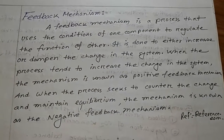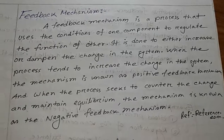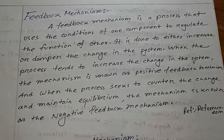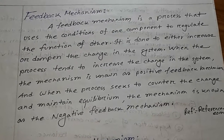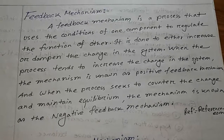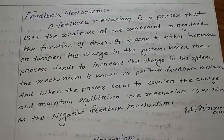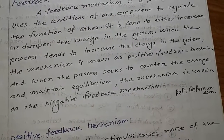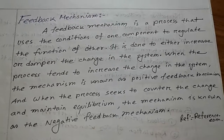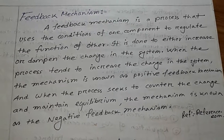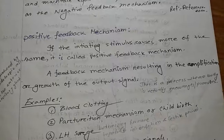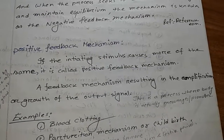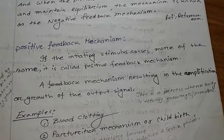Feedback mechanism: A feedback mechanism is a process that uses the conditions of one component to regulate the function of another. It is done either to increase or dampen the changes in the system. When the process tends to increase the change in the system, the mechanism is known as positive feedback mechanism. When the process seeks to counter the change and maintain equilibrium, the mechanism is known as the negative feedback mechanism. If the initiating stimulus causes more of the same, it is called positive feedback mechanism.